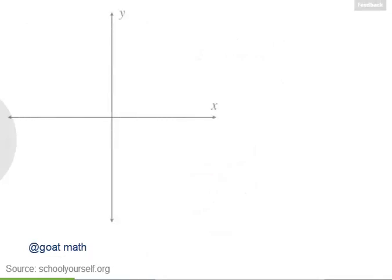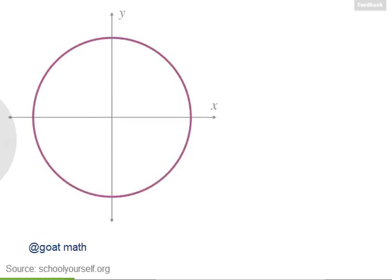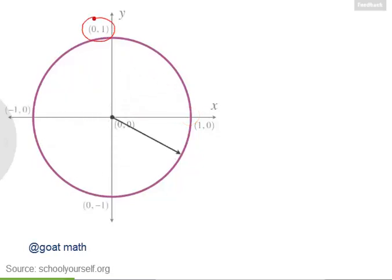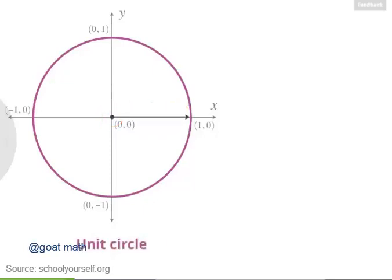To look at larger angles, let's first draw in some x and y axes and also draw in a circle. The center of this circle is the origin, meaning the point (0, 0). Let's say the radius of this circle is 1, so this is the point (1, 0), and the circle also passes through the points (0, 1), (-1, 0), and (0, -1). This circle, centered at the origin with radius 1, is called the unit circle, and we'll be using it to define the sine, cosine, and tangent of any angle.